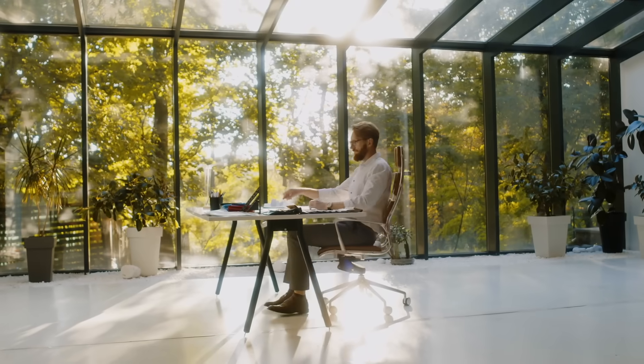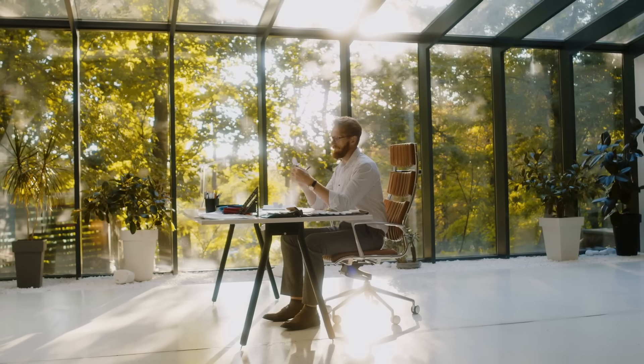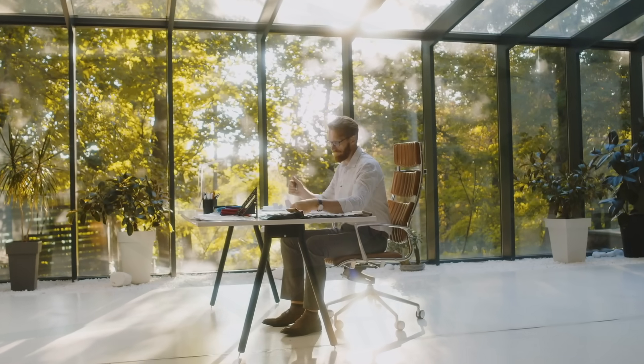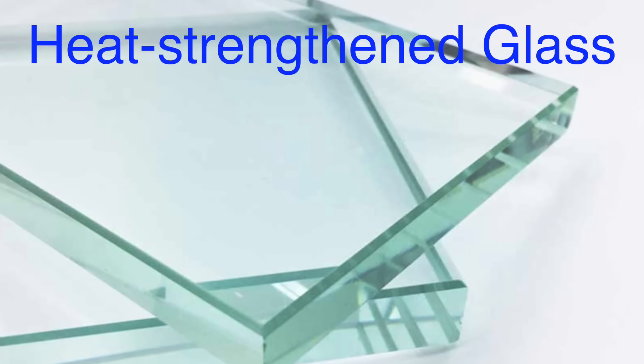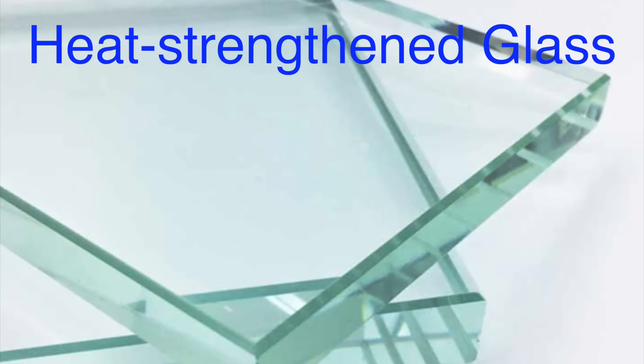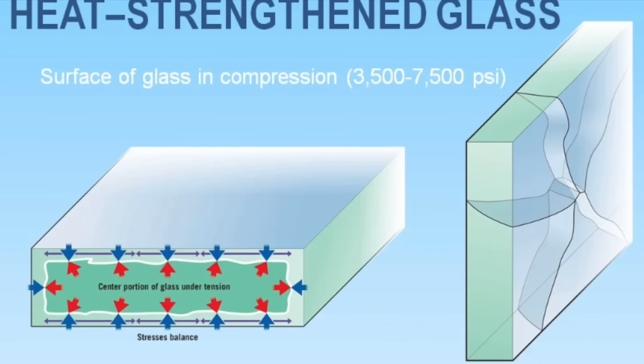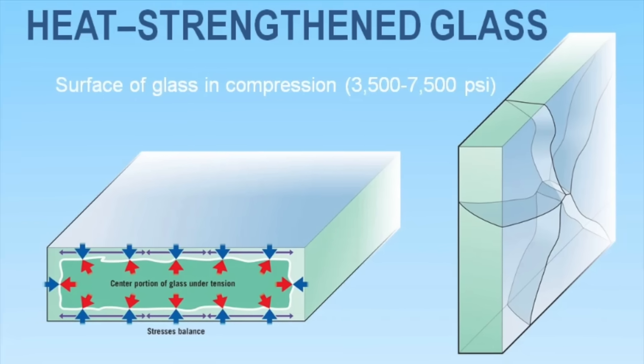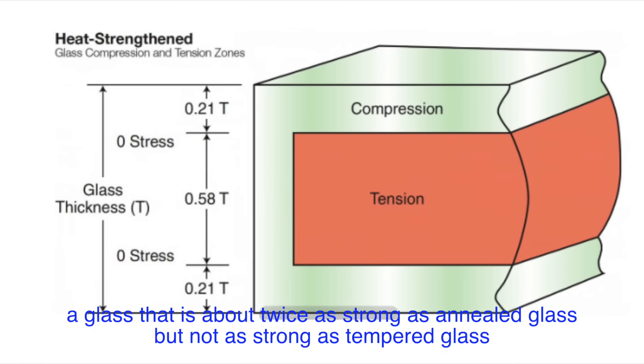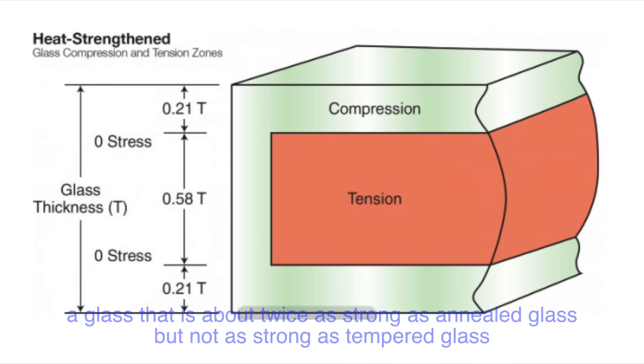In addition to tempered and laminated glass, there are several other types of specialized glass for specific applications. One such type is heat-strengthened glass, which is similar to tempered but not as strong. Heat-strengthened glass is made by heating the glass to a lower temperature and then cooling it more slowly. This results in glass that is about twice as strong as annealed glass but not as strong as tempered glass.